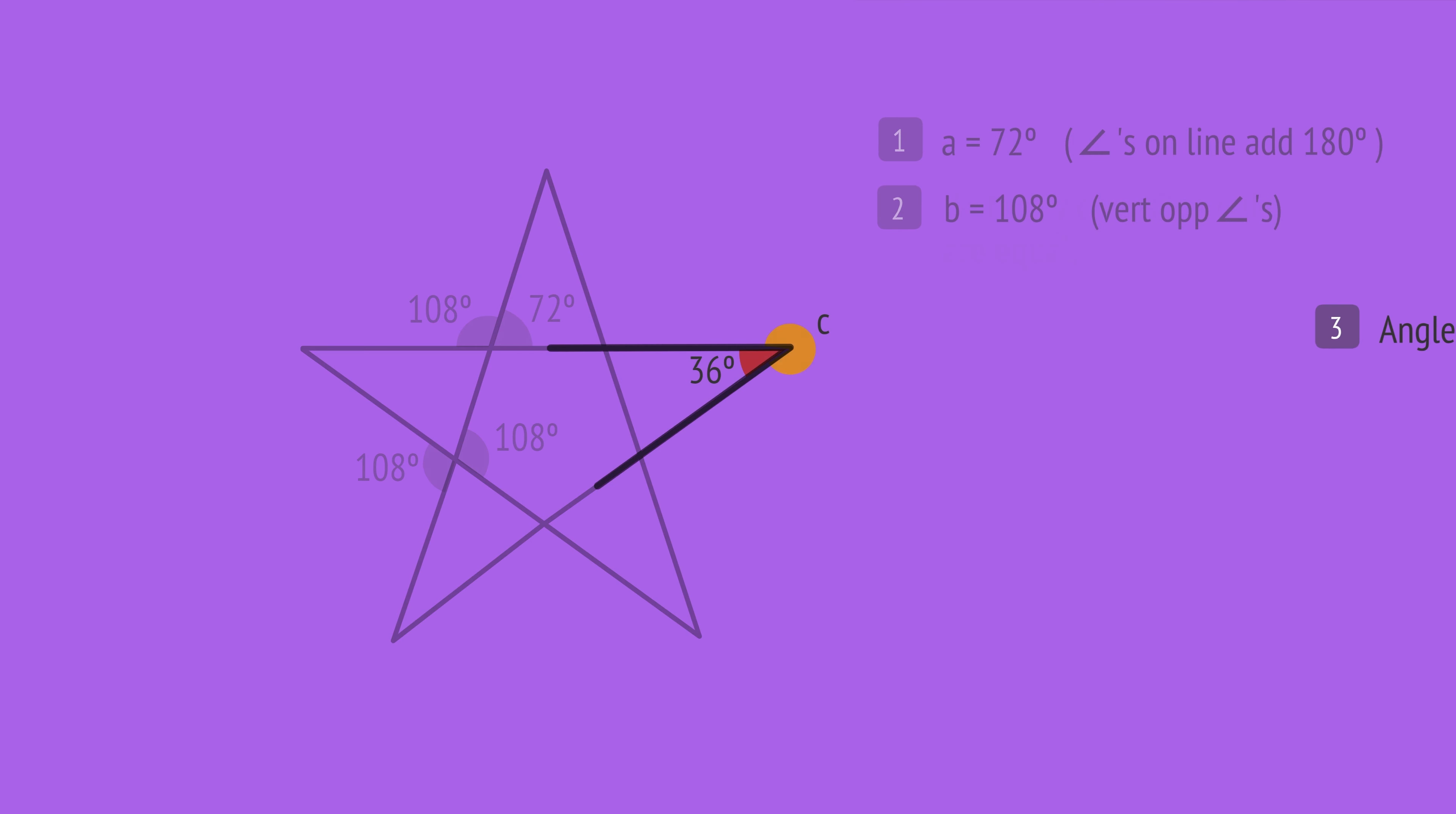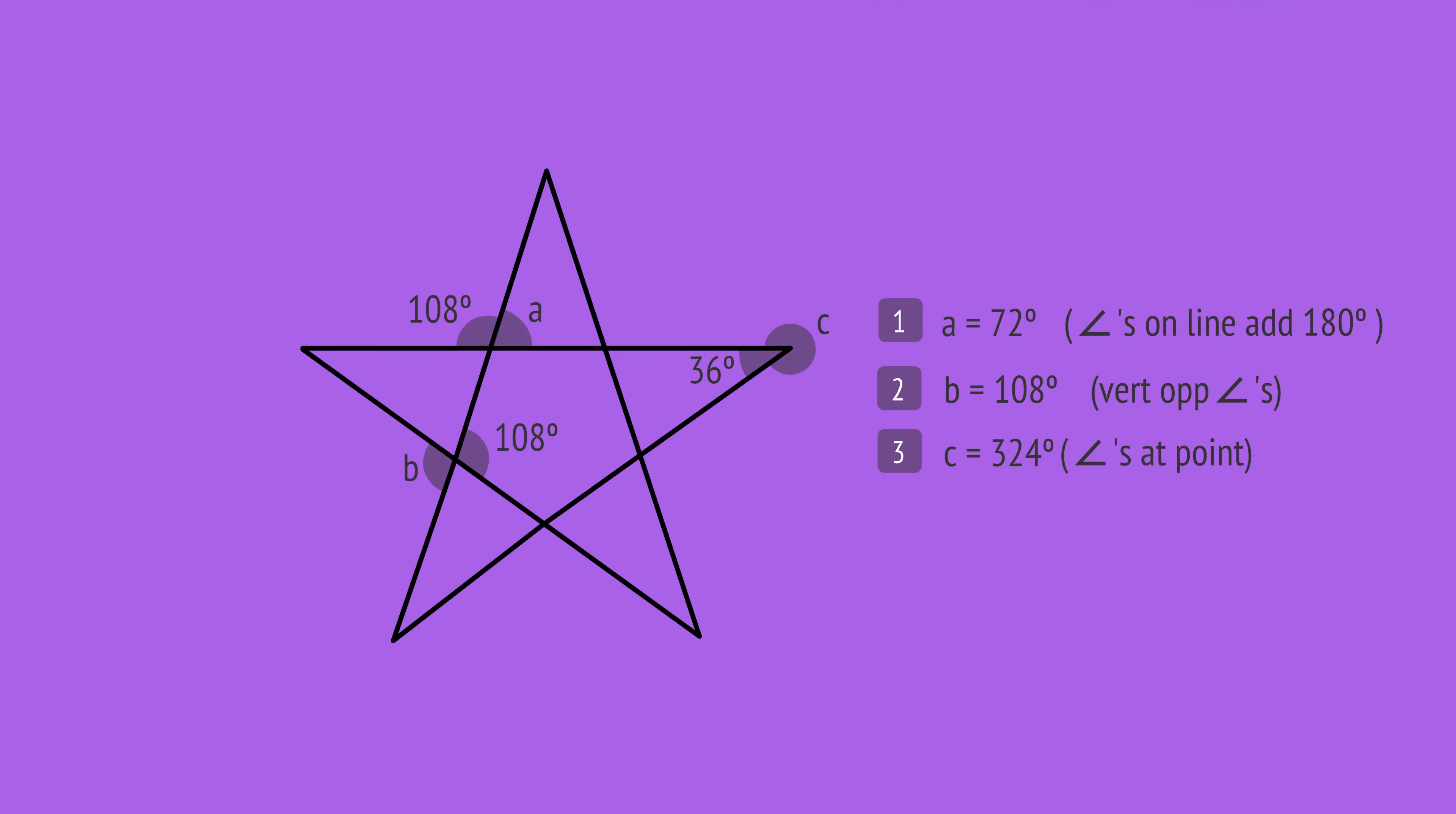And here we have the angles at a point adding to 360 degrees. So angle C equals 360 minus 36, or 324 degrees. We can abbreviate our working, giving the angle relationships we used.